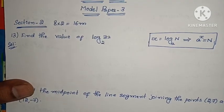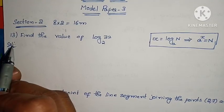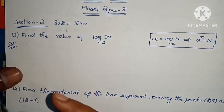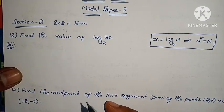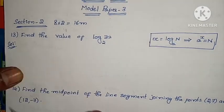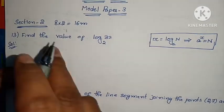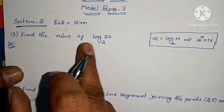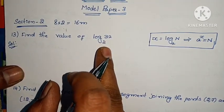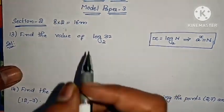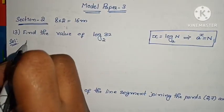The question starts from the 13th one. So in section 1, questions up to 12 are complete. Then, continuing, find the value of log 32 base 2. Next, let's solve this.